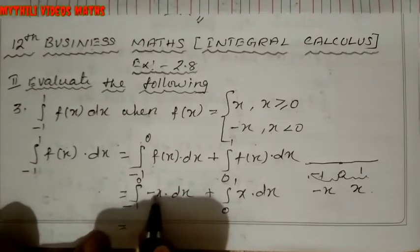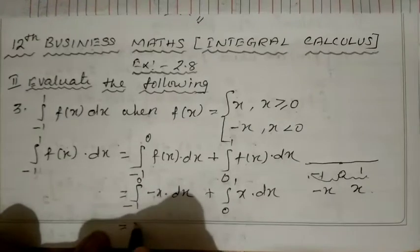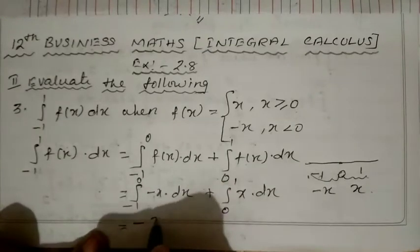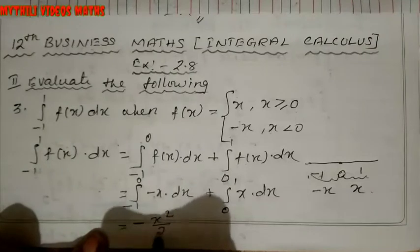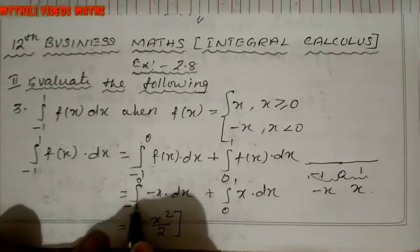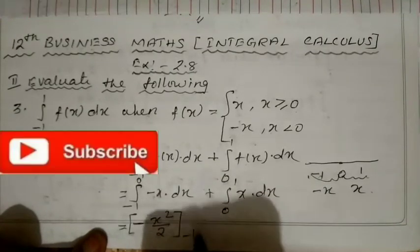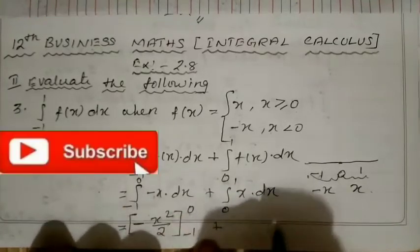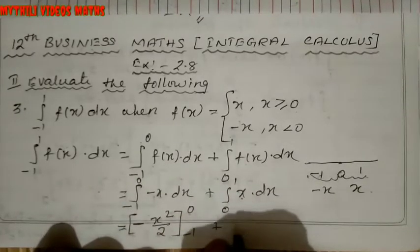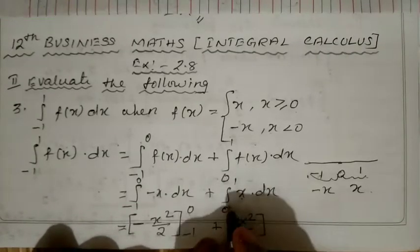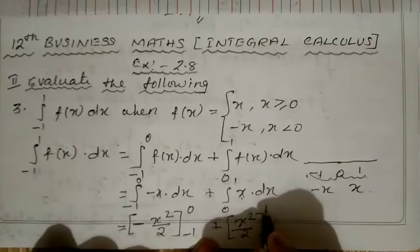Now we integrate. For -x, we write minus times x squared divided by 2, with limits -1 to 0. Similarly, integrating x gives x squared divided by 2, with limits 0 to 1.